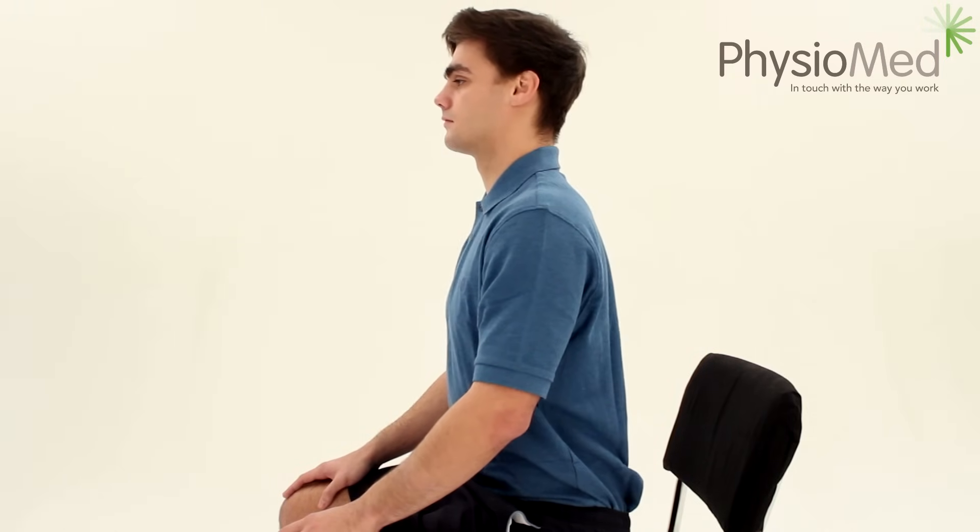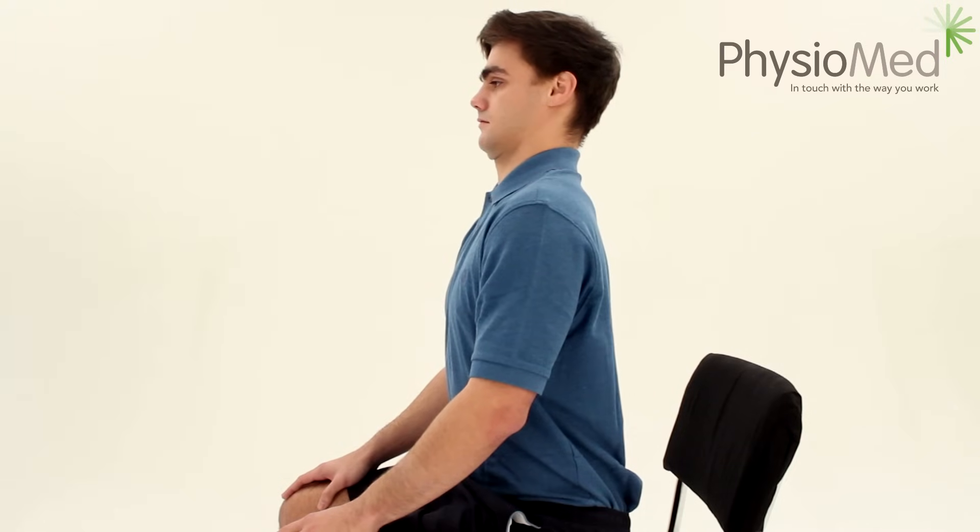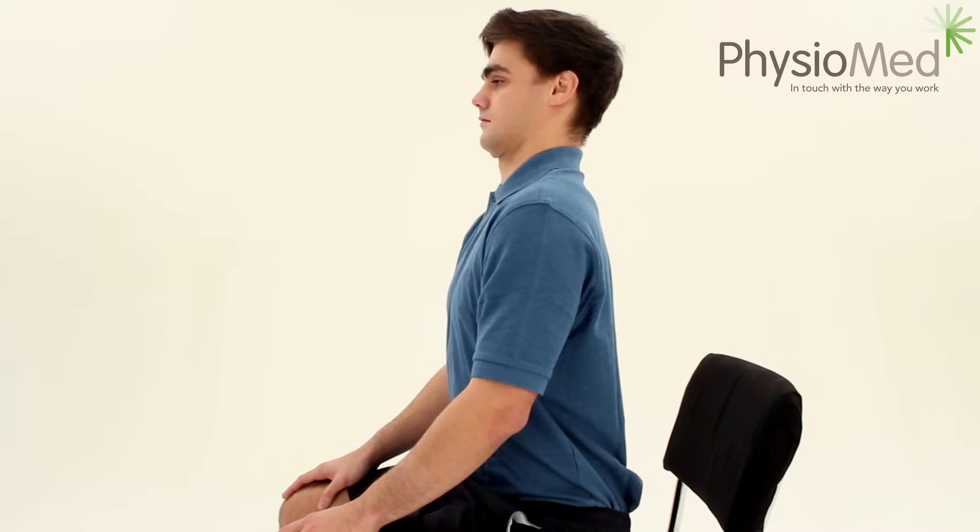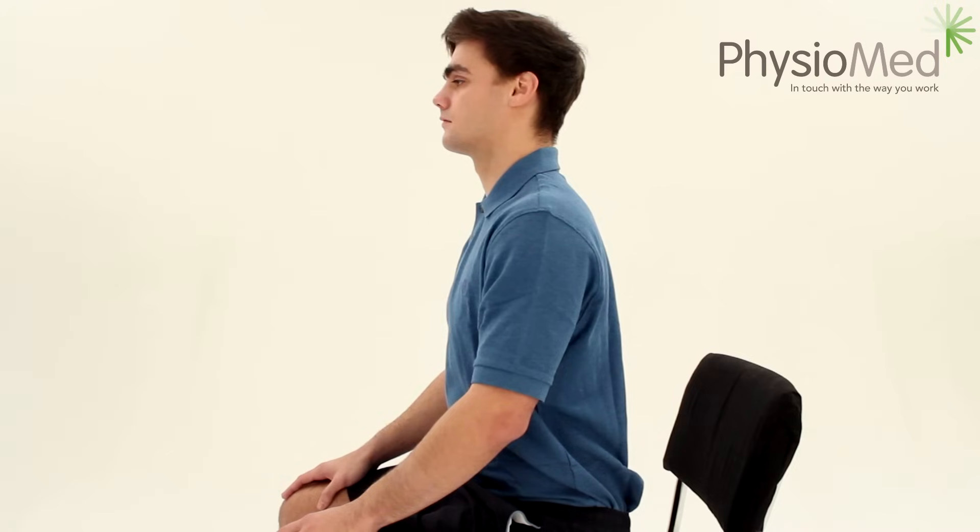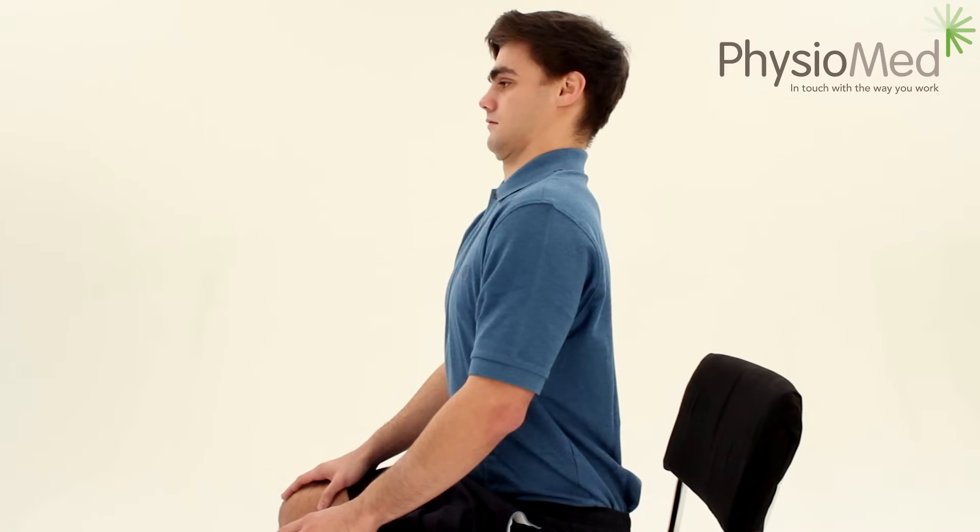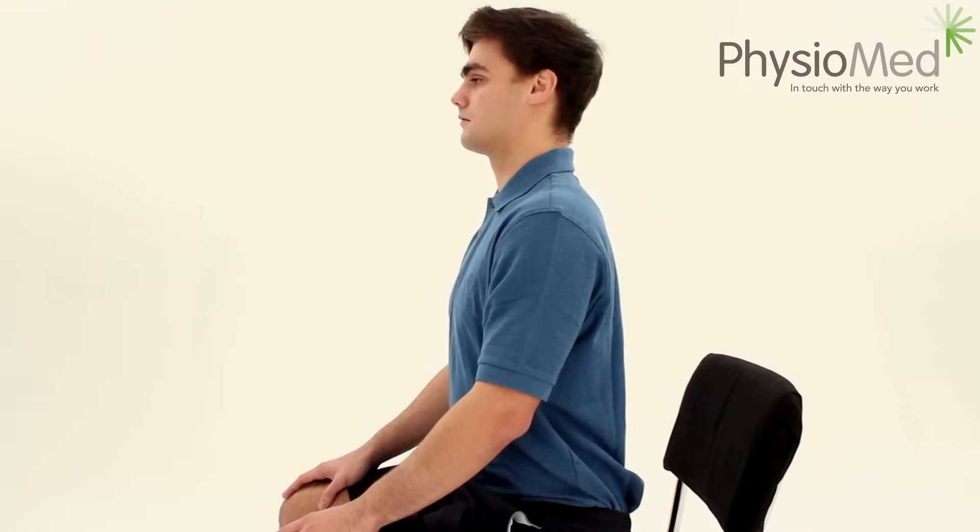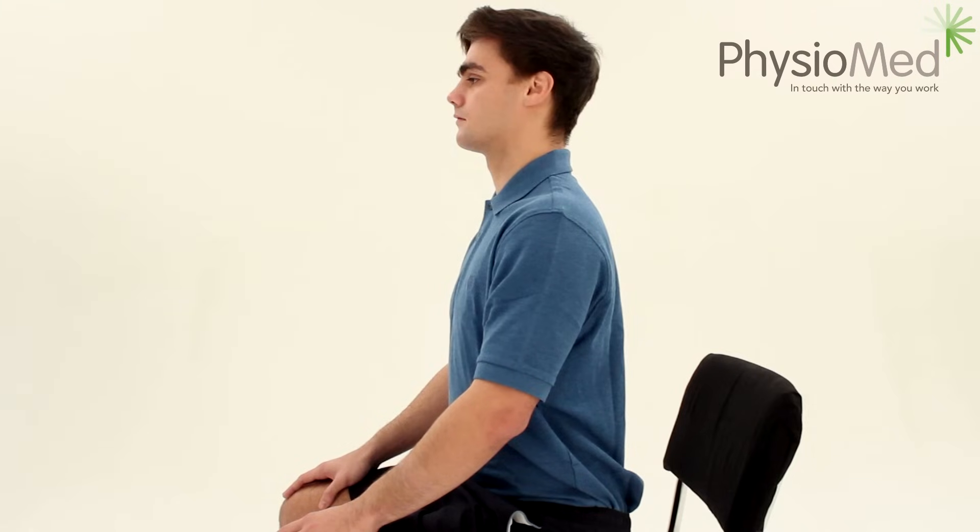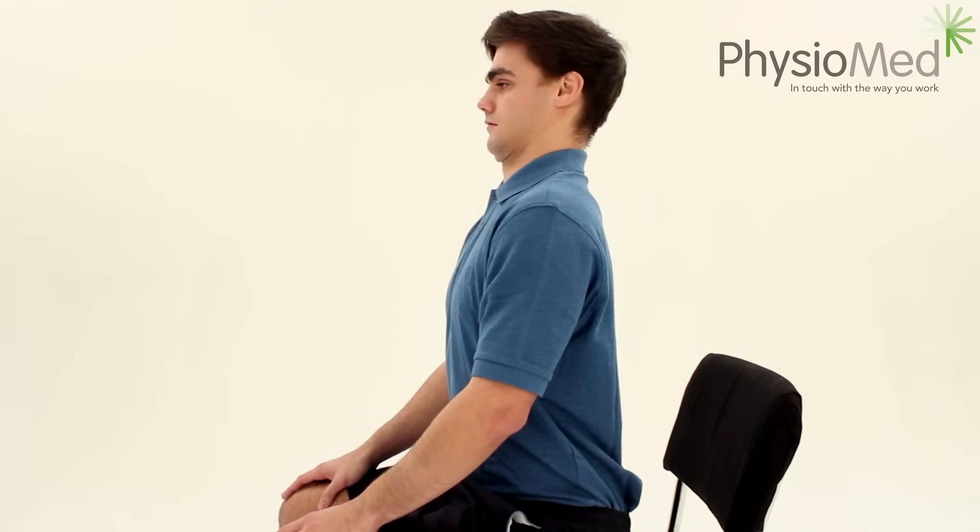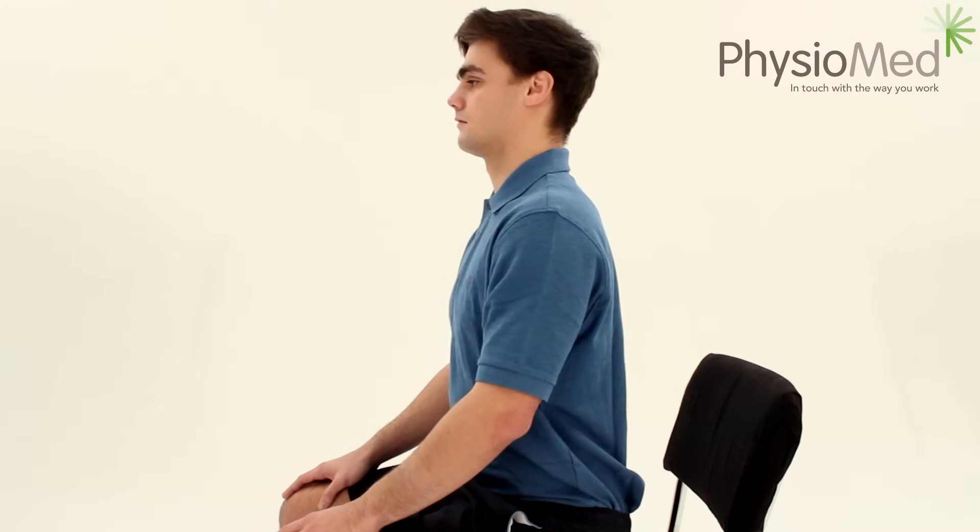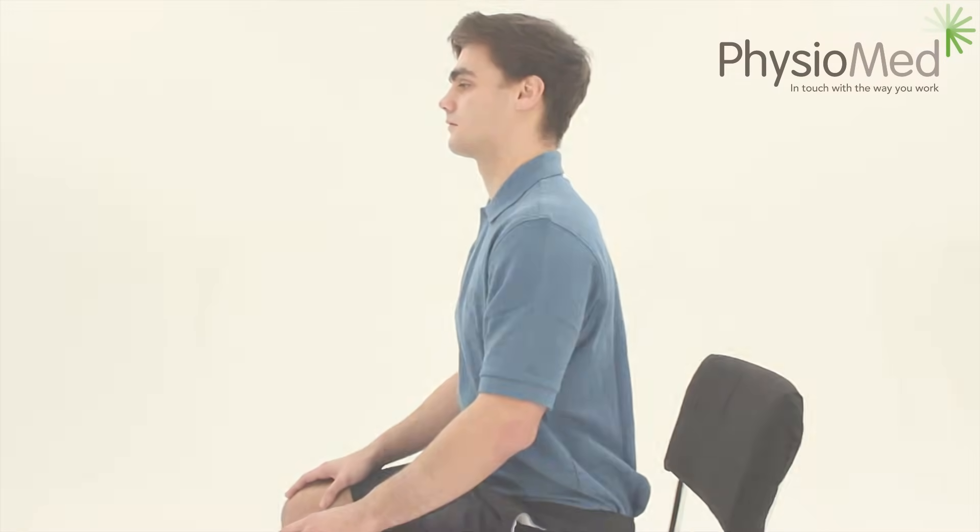Sit up straight with a slight curve in the base of the spine. Focus on an object at eye level as if you were looking at the horizon. Slowly, without moving your shoulder and without looking up or down, bring your head back and tuck your chin in and hold for 2-3 seconds. If you do just 5 of these 3 times a day, it could really help reduce the gradual increase of strain on your neck and the shoulder area.